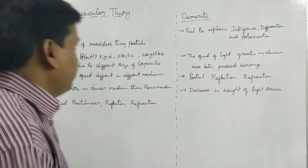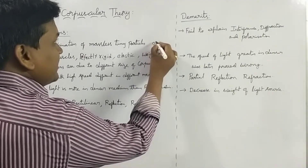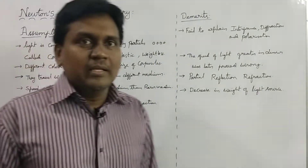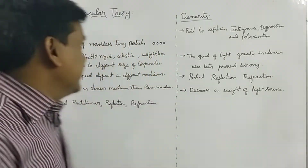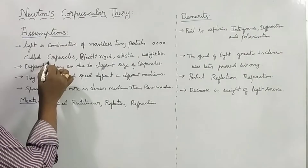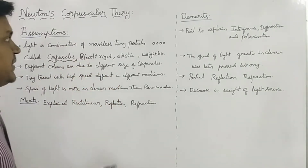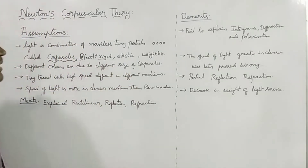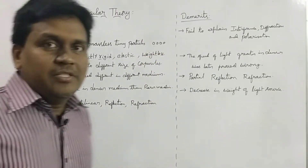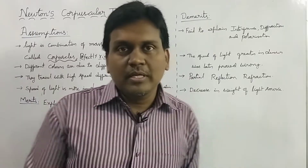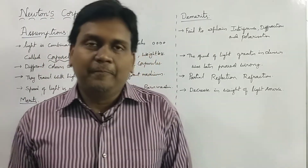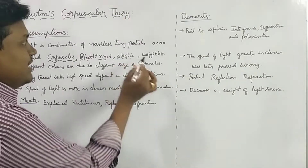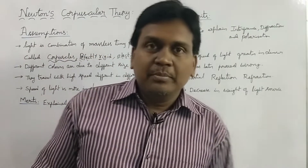These corpuscles are very small particles — they seem to be like small balls, very tiny and small. He named these light particles as corpuscles, and these corpuscles are perfectly rigid. They are having a specified shape; they are not like a liquid or a gas, so they are solid. He assumed that they are perfectly rigid and also elastic in nature.